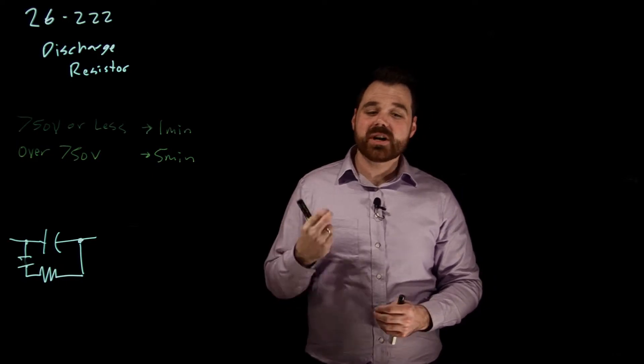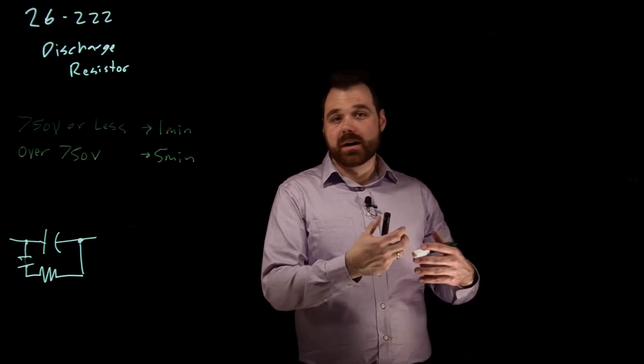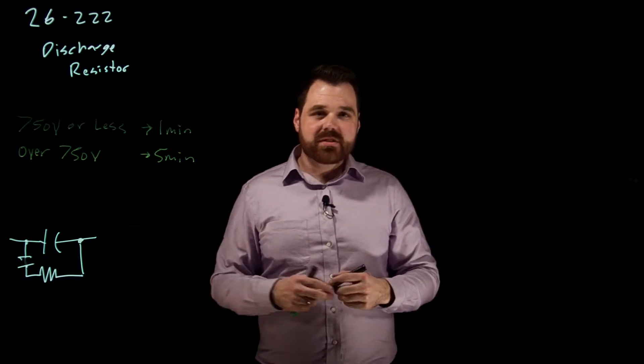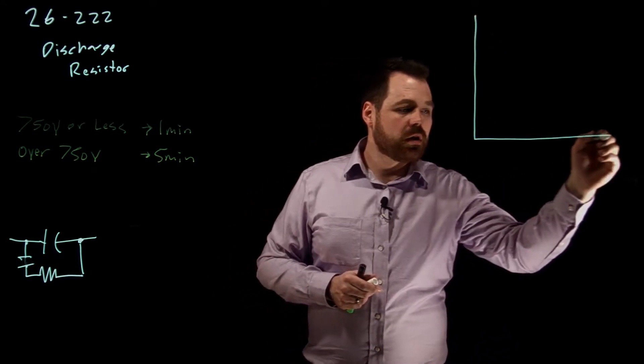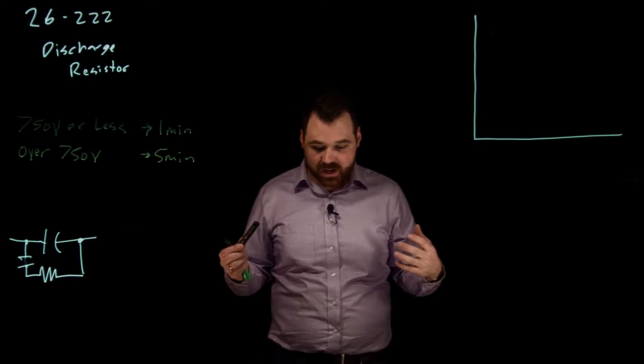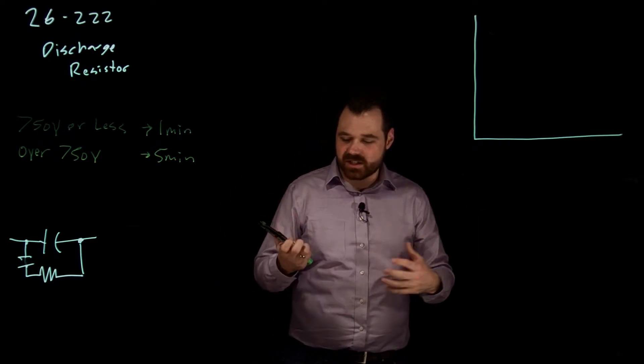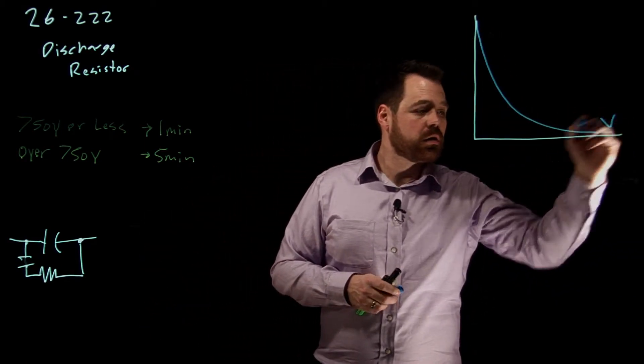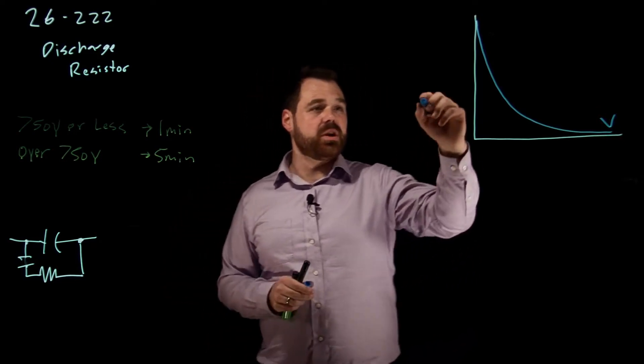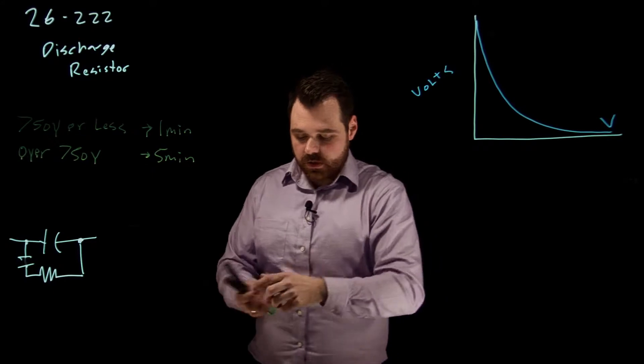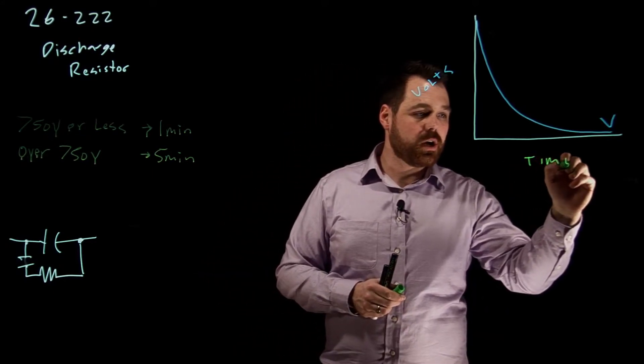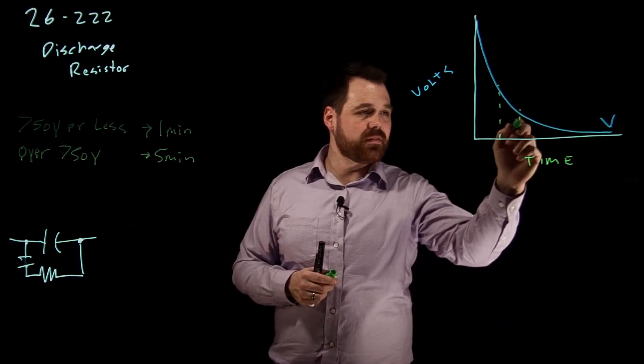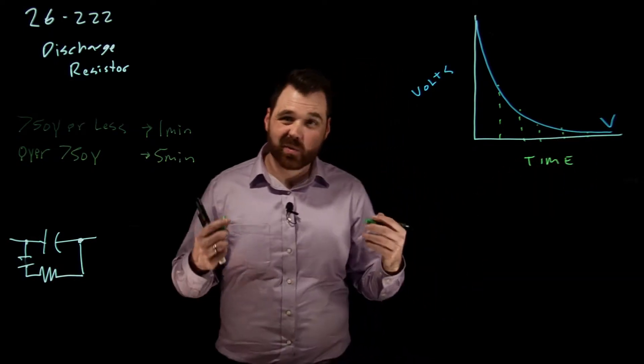But when it releases that charge, it releases in a DC format. It's going to be direct current because it stores all the electrons on one plate and not on the other. So we have to think back about how current operates in a voltage, sorry, the charge in a DC circuit. So what we see is our voltage, as soon as we discharge, our voltage kind of goes like that. So this being our voltage, volts, and this being our time. Now, what we see happening is along the way, there's five equal time constants.